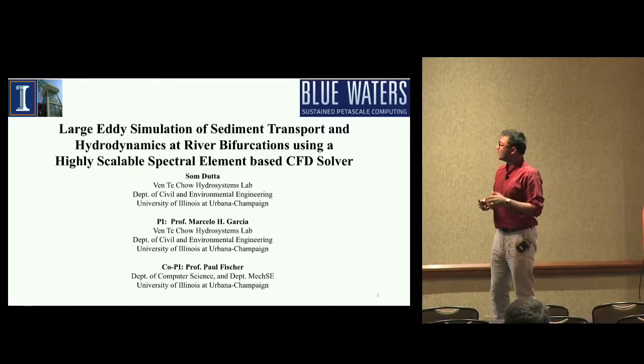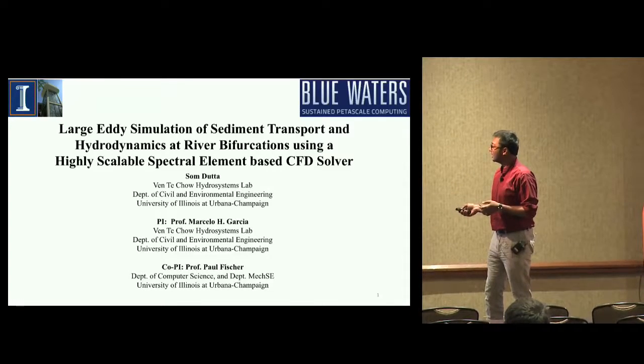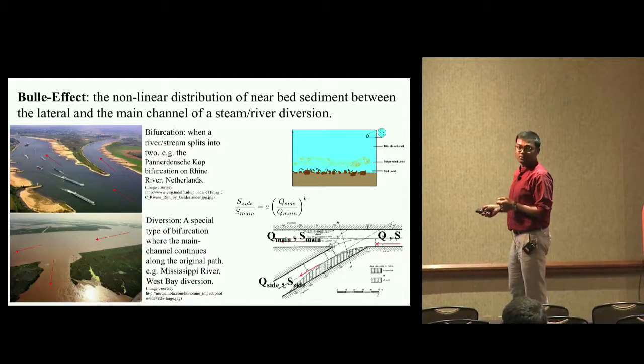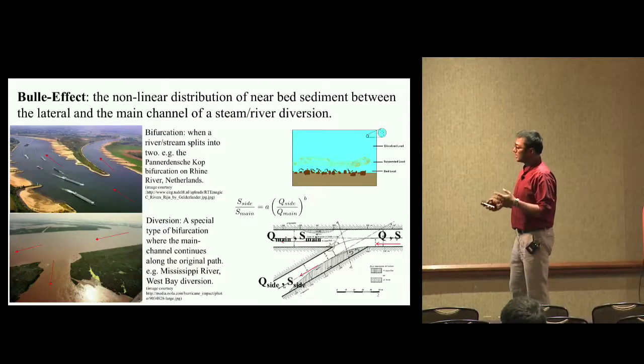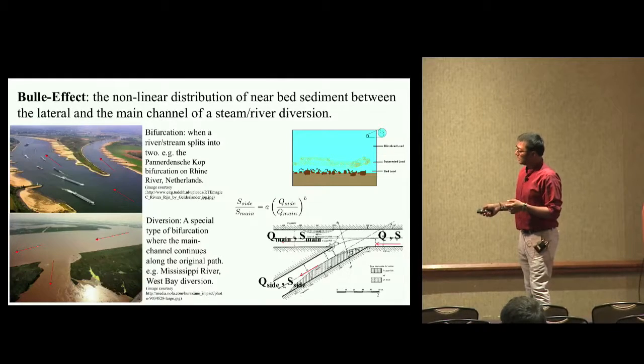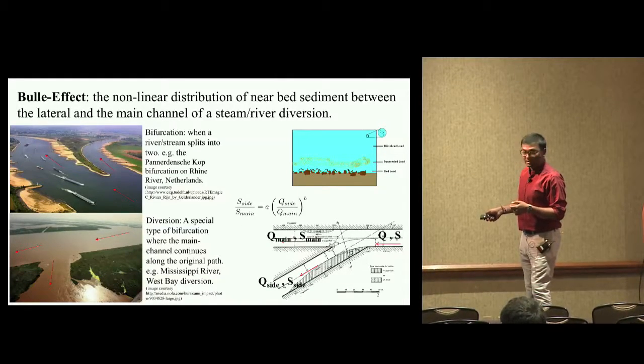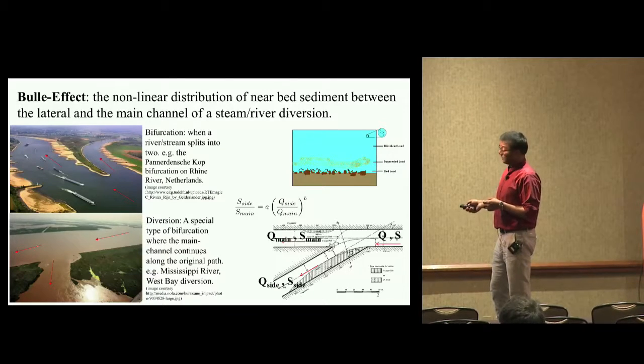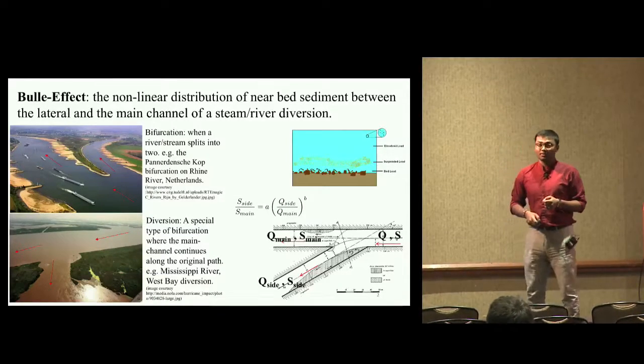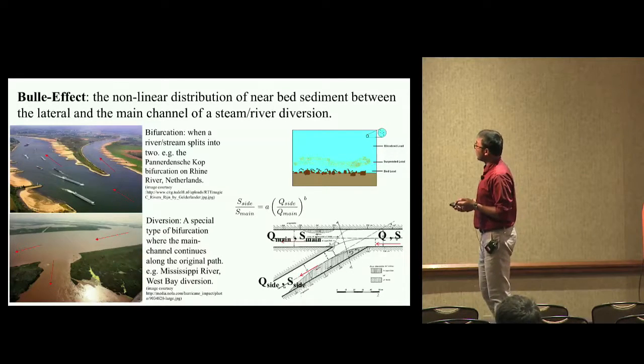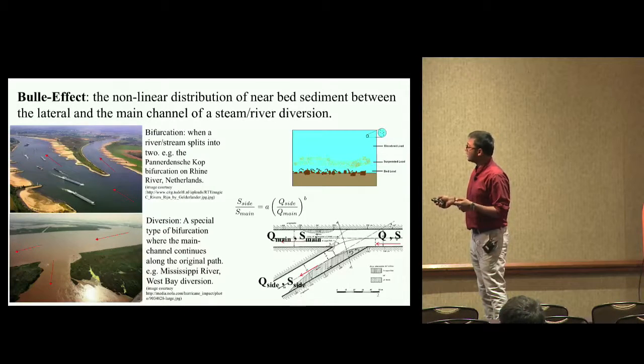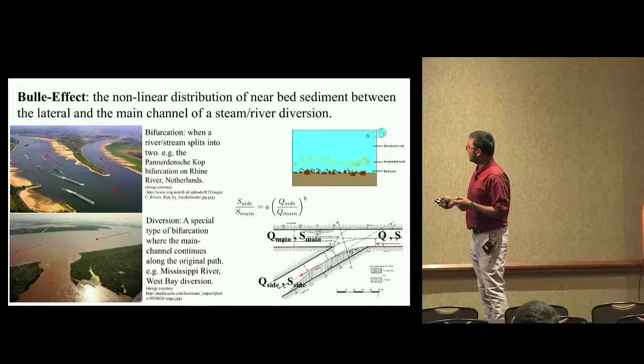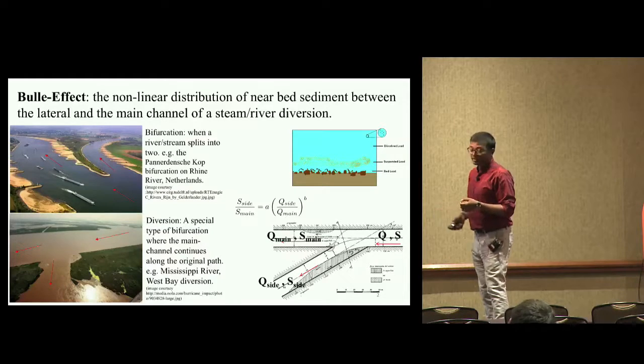For those not in the area of river mechanics, a bifurcation is when a river splits into two other rivers. There is a special class called diversions in which the main river continues to flow but there is a side channel which comes out from the side. Sediment is transported either in suspension in the water if it's fine, or as bed load along the bed if it's larger.